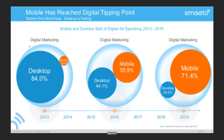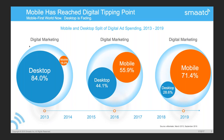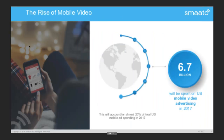Looking at digital ad spend in general from 2013 to 2019: 2016 was really the first time that mobile spend outpaced desktop. If you look at the estimates for 2019, digital marketing spend for mobile far outpaces desktop — a pretty major change. Looking back at 2013, which in ad tech is not that far back, it was very much the other way around. We all know that we live in a mobile-first world, but ad spend is finally catching up to that.